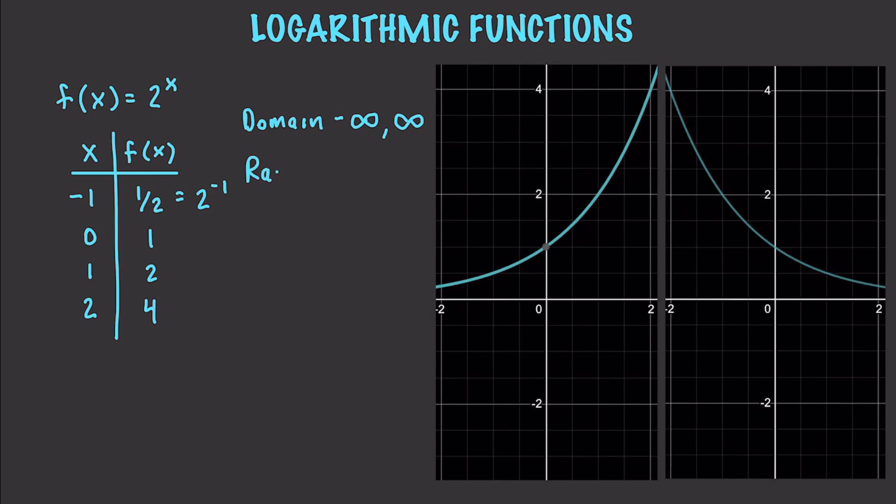Likewise you can see with this graph right here, this would be an example of this function in which we have two with a negative exponent. In that situation we would just reflect our other results about the y-axis.